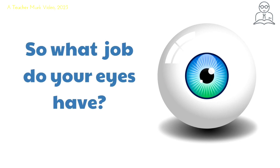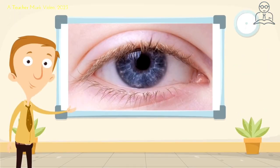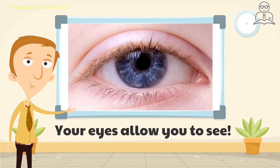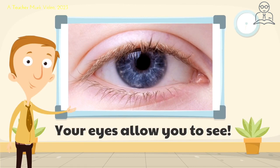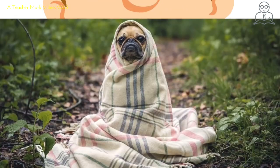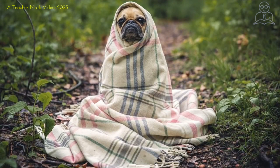So what job do your eyes have? That's a pretty easy question — your eyes allow you to see. Your eyes are a special group of tissues that allow you to see. In fact, you're using your eyes right now to watch this video. I see a dog in a blanket — he's so cute! You wouldn't even know this dog existed if it wasn't for your eyes. Eyes are great!